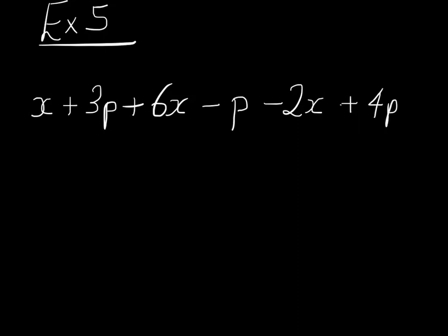Well let's deal with x's first. We've got an x here, and we're going to add plus a 6x, so we've got 7x. But then we're going to subtract 2x. So x plus 6x is 7x, take away 2x is equal to 5x. So this would be equal to 5x.